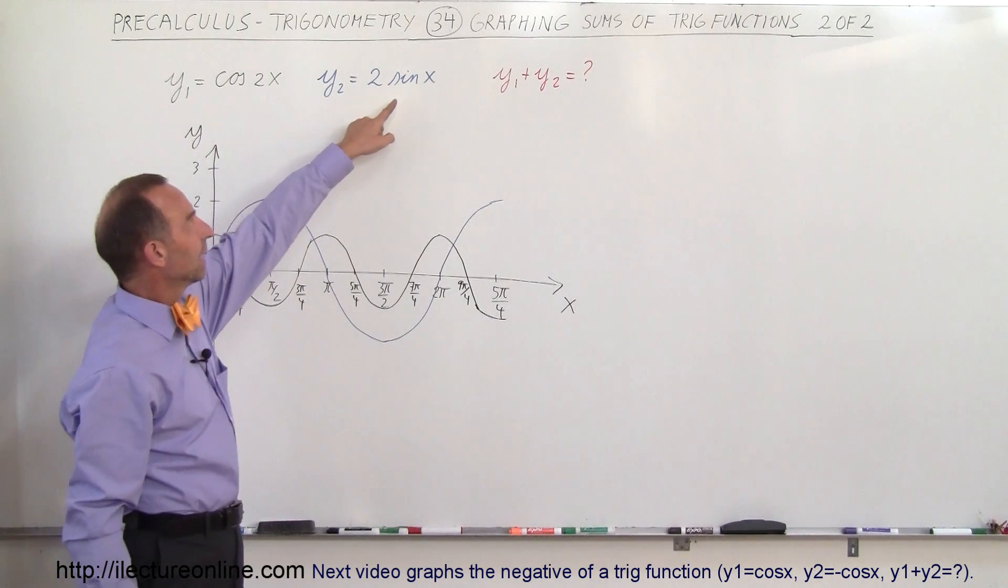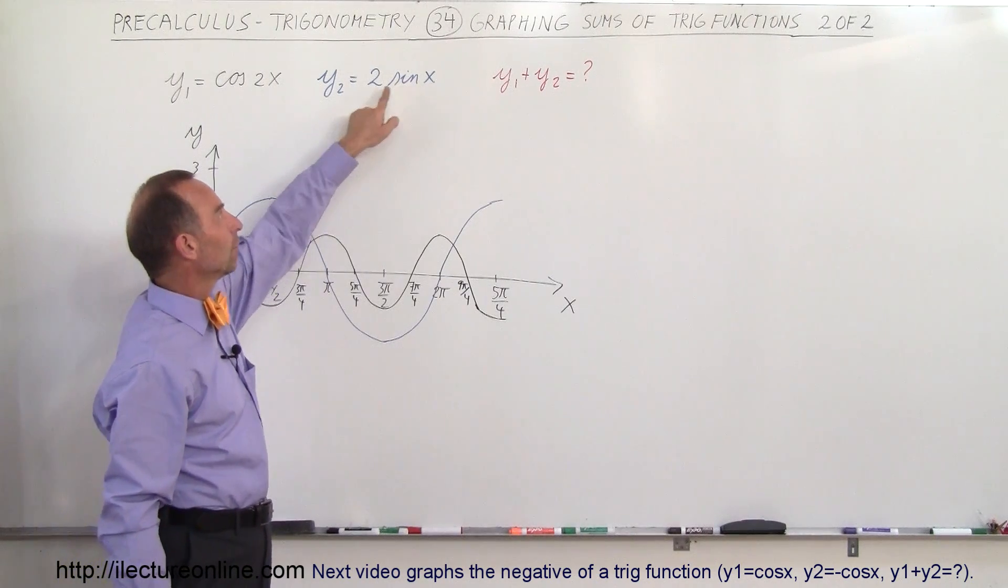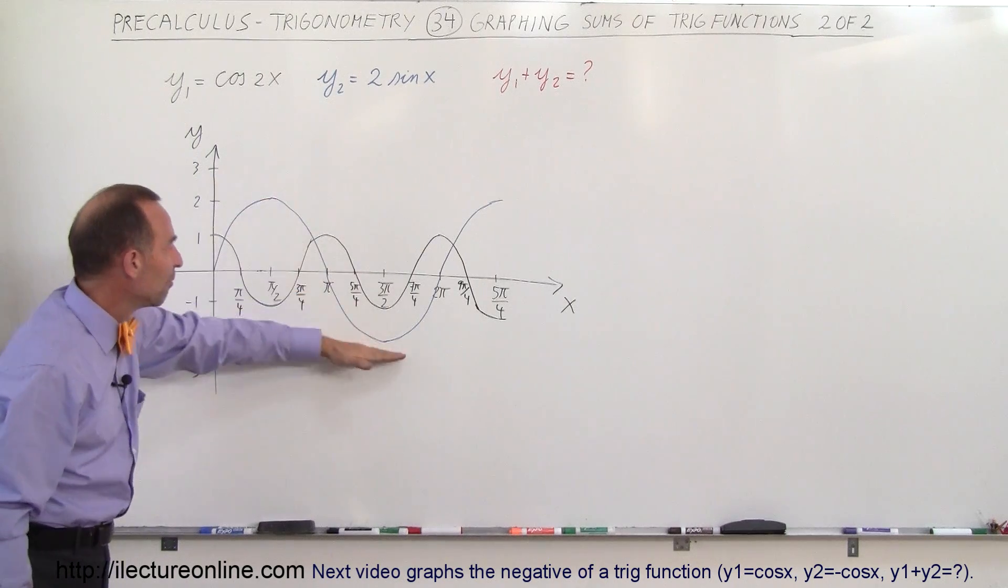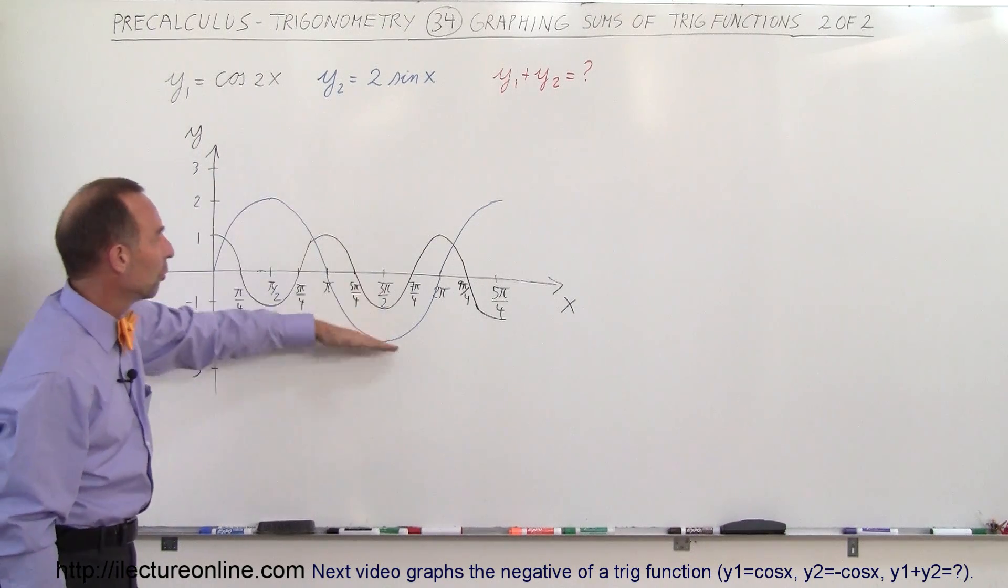And on the sine function, k is equal to 1, but the amplitude is 2. That means when it reaches maximum or minimum value, it'll be equal to 2 rather than 1.